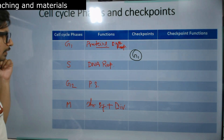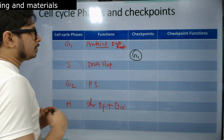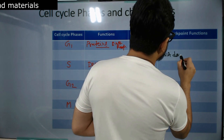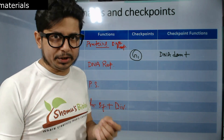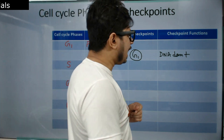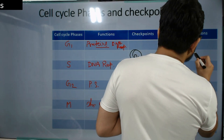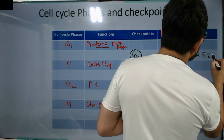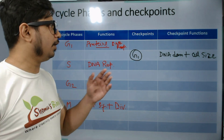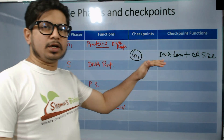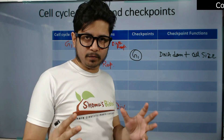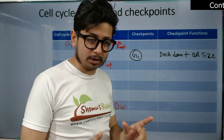The G1 checkpoint checks for DNA damage — the most alarming condition for a cell in terms of division. If there is any DNA damage, it needs to be fixed right away. Along with that, it checks for cell size: whether the cell has reached the average size or not. So the G1 checkpoint verifies that the cell has adequate size and proper volume for cell division to proceed, and that there is no DNA damage.